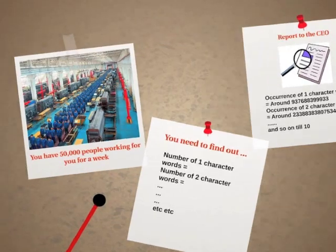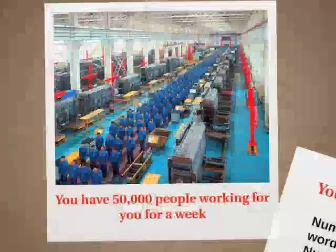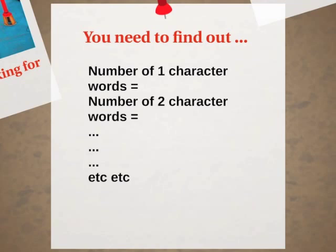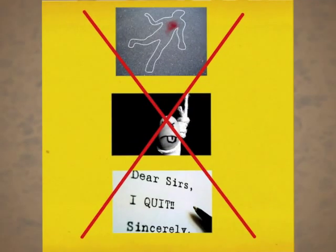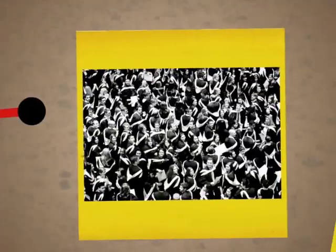Picture yourself in that position for a moment. You have 50,000 people working for you for a week, and you need to find out the number of one-character words, two-character words, and so on, covering the maximum number of blogs on Blogspot. Finally, you need to give a report to your CEO with something like: occurrence of one-character words — around 937,688,399,933; occurrence of two-character words — around 233,883,838,307,534,34; and so on till ten. How would you solve it?